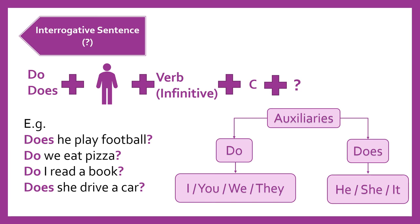Next, do we eat pizza? — ¿Nosotros comemos pizza? Here we use the auxiliary do because we are using the pronoun we. Next, do I read a book? — ¿Leo yo un libro? Here also we use the auxiliary do because we're using the pronoun I. And finally, does she drive a car? Don't forget — we don't add an S to the verb because this is an interrogative sentence, and we use the auxiliary does because we're using the pronoun she.